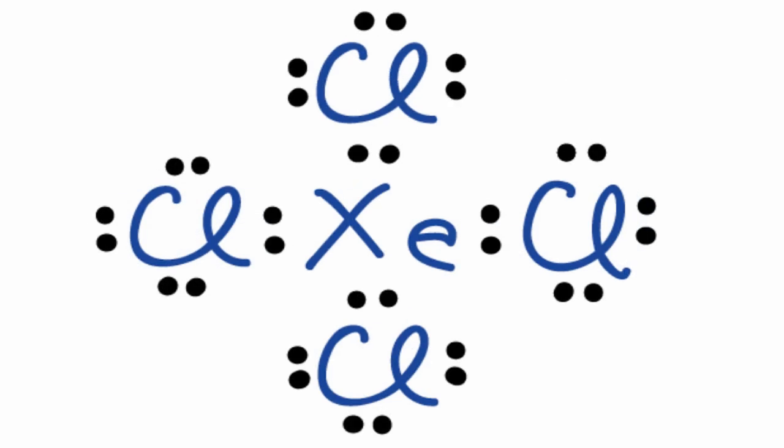So at this point, each of the atoms in the XeCl4 Lewis structure has 8 valence electrons. So the outer shells are full for each of the atoms in the structure. The problem is we've only used 32 valence electrons, and we have a total of 36 valence electrons for XeCl4.